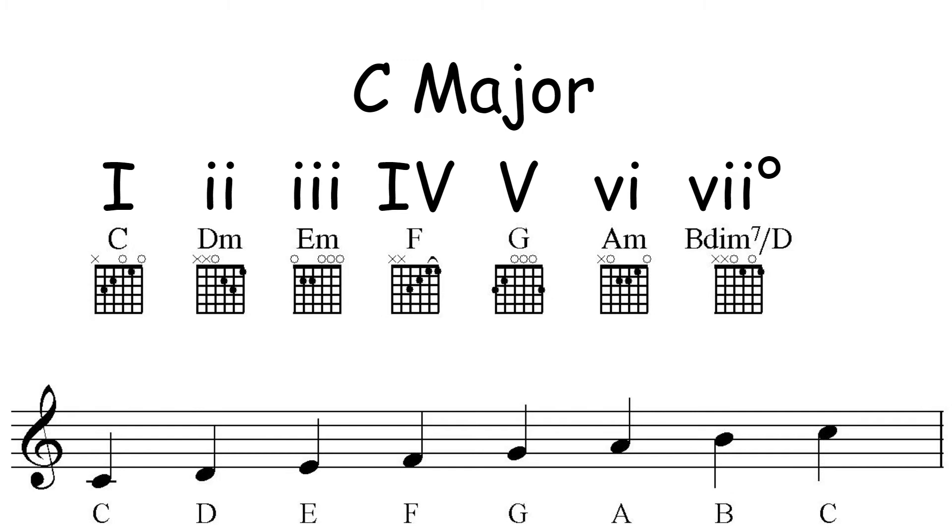Another big advantage of using the Roman numeral system over letter chords is if you want to transpose your music. Let's say you had a chord progression of one, four, six, five—a fairly standard chord progression. If you put that in the key of C, you have C, F, A minor, back to G.